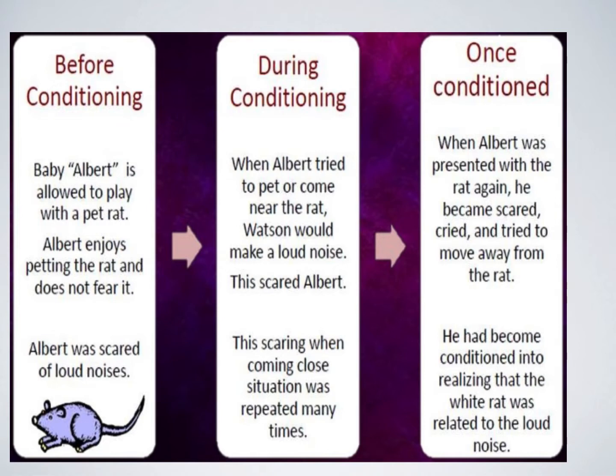However, the effects of phobias that are learned through classical conditioning may be significantly reduced over time. After the experiment had concluded, Albert's conditioned phobia of the rats significantly lessened over time, and after a few months Albert no longer had a phobia of rats. This is because his conditioned response became extinct after the stimuli were no longer paired together.